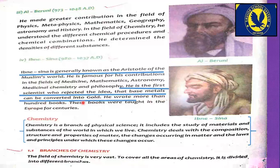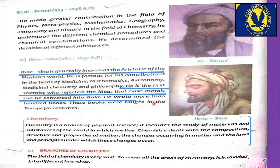He is the first scientist who rejected the idea that base metals can be converted into gold. While many Muslim scientists were trying to convert base metals into gold through alchemy, Ibn Sina declared that this is not possible and that this effort should be abandoned.